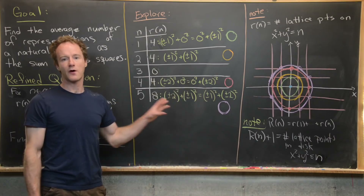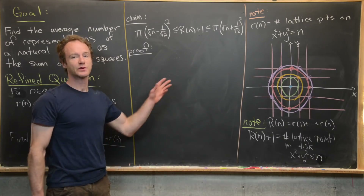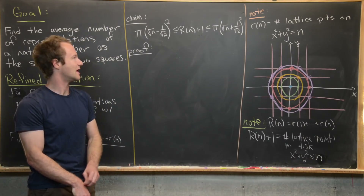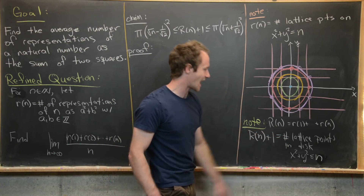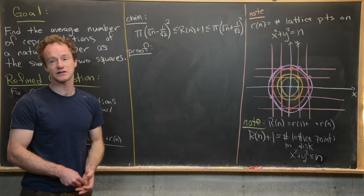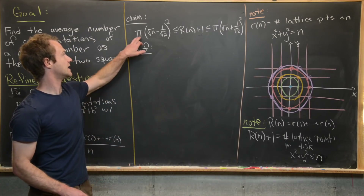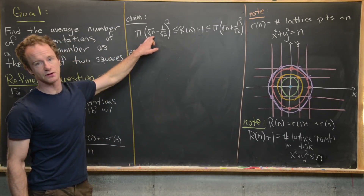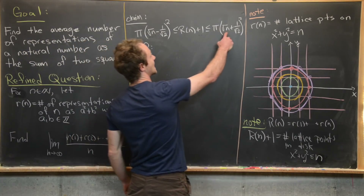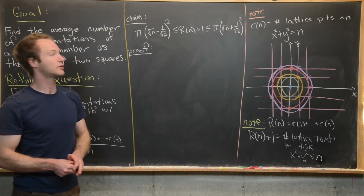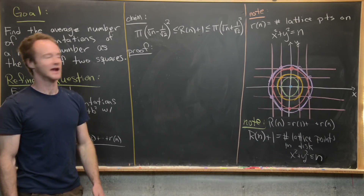Now that we've built some intuition, we dive into the solution. We'll prove the following important claim: R(n) + 1, the number of lattice points in the disk x² + y² ≤ n, lies between π(√n − 1/√2)² and π(√n + 1/√2)².